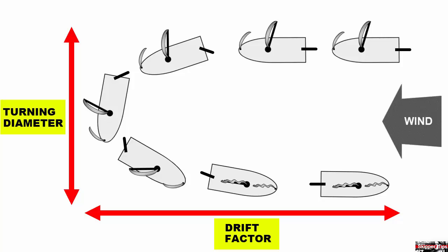You can use turning diameter and drift factor to know the amount of room your boat needs to make a turn, and the distance required for your vessel to drift to a stop in a specific wind velocity. These two boat handling characteristics can be vital to know for man-overboard recovery, picking up a mooring buoy from a downwind approach, or approaching a dock under sail with a wind aft.